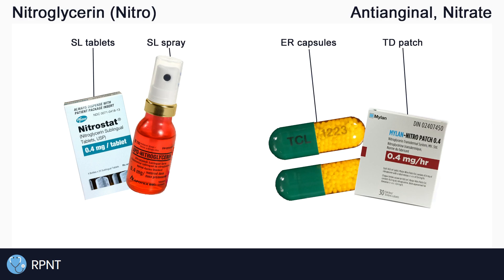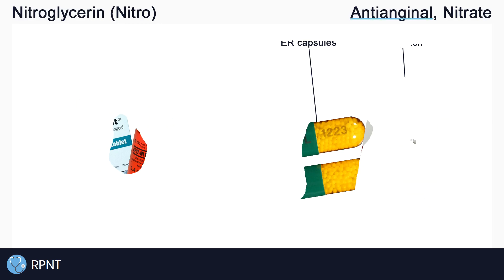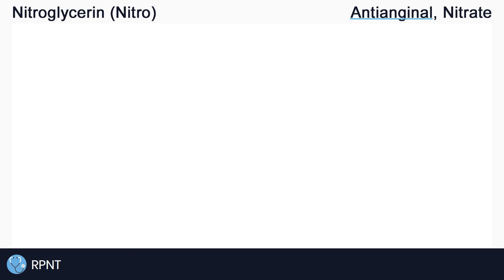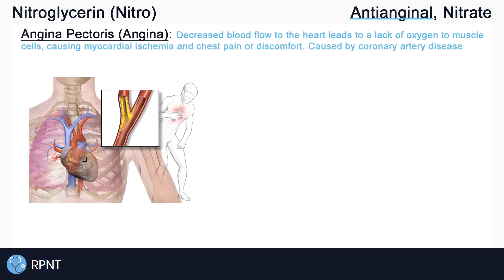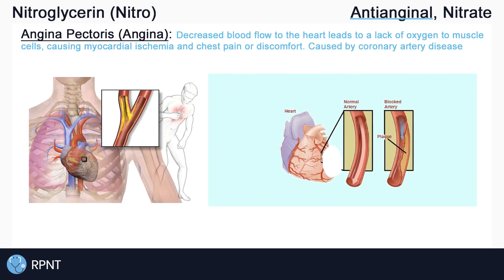Nitroglycerin belongs to the anti-anginal drug classification, simply because it can be used to prevent or treat angina pectoris, also known as angina. Angina can be described as chest pain or discomfort due to decreased blood flow to the heart.